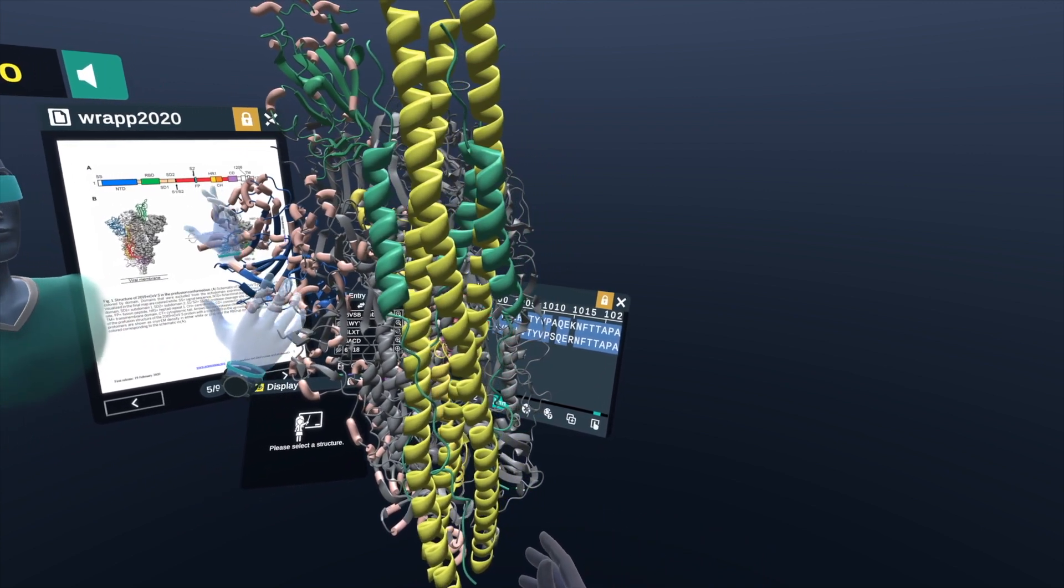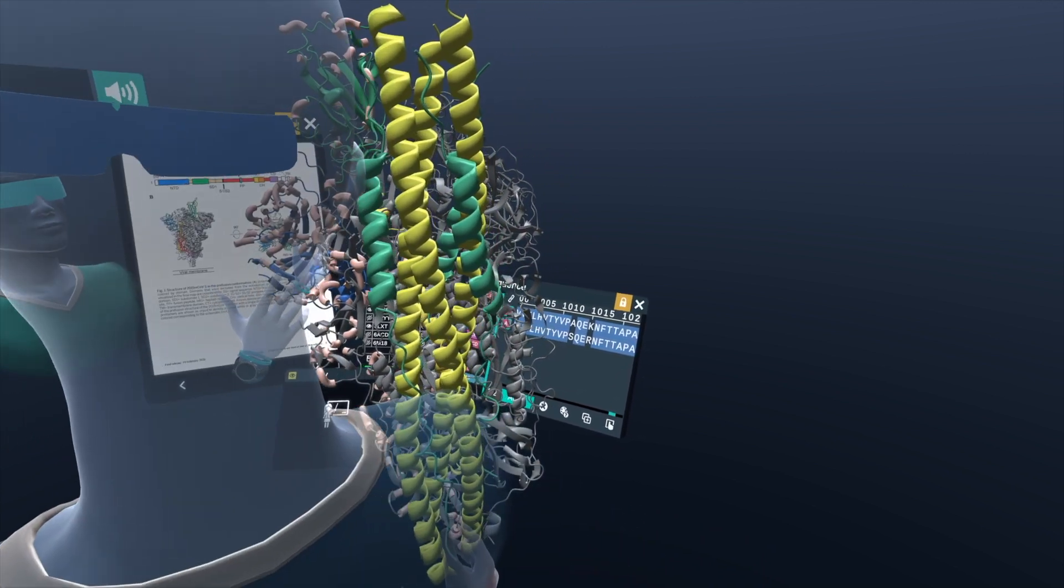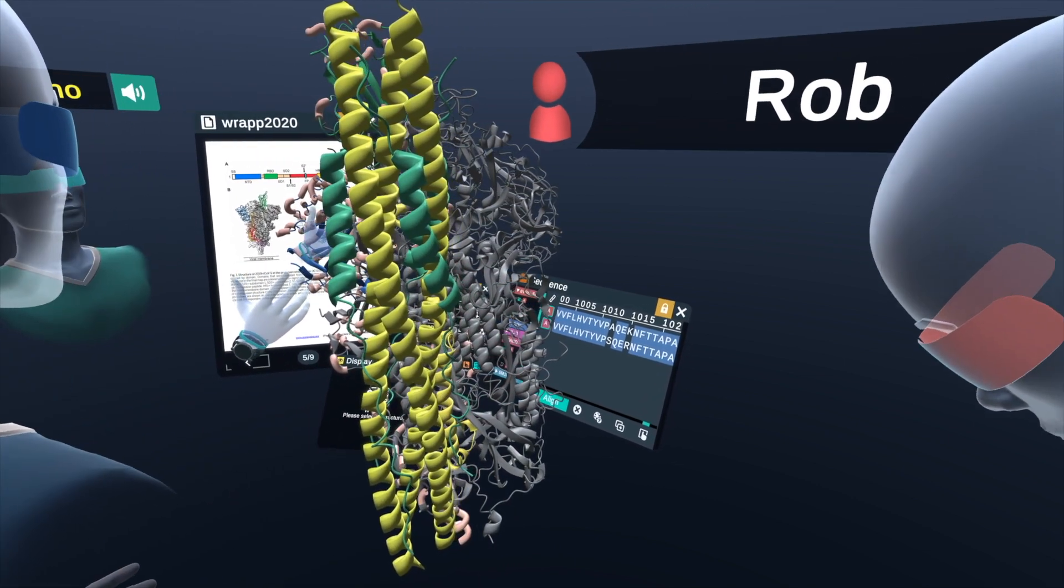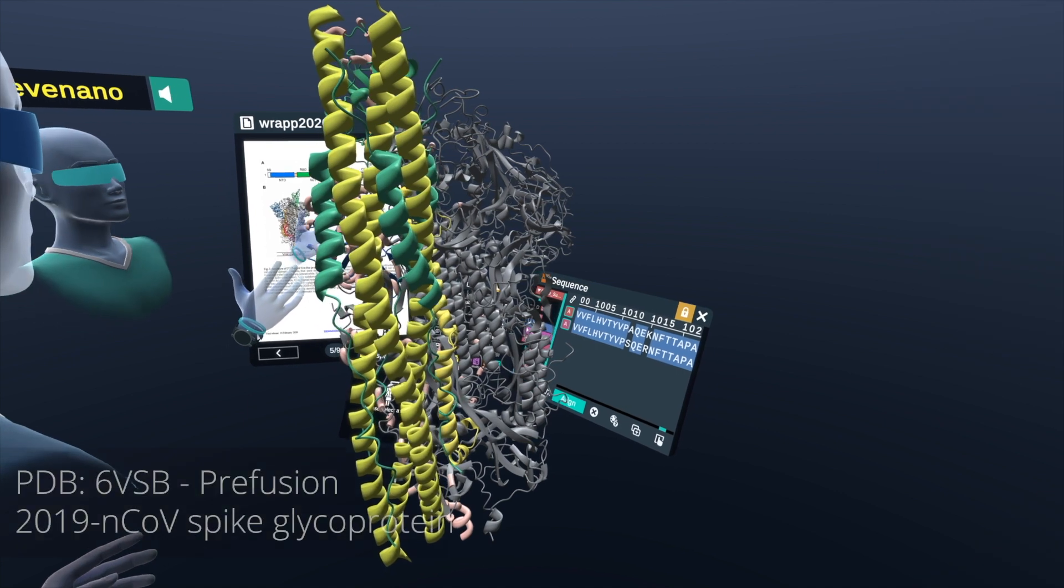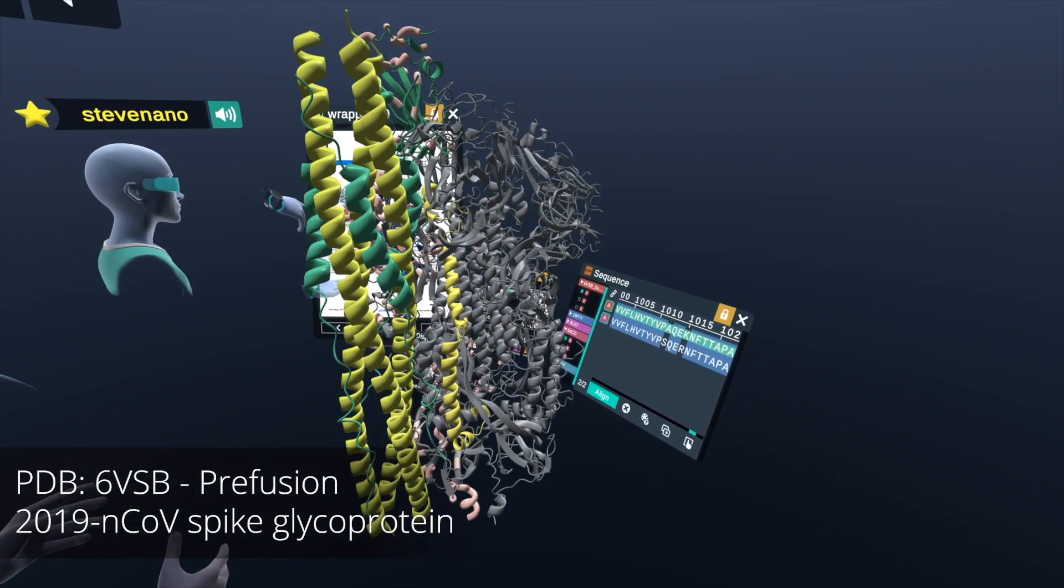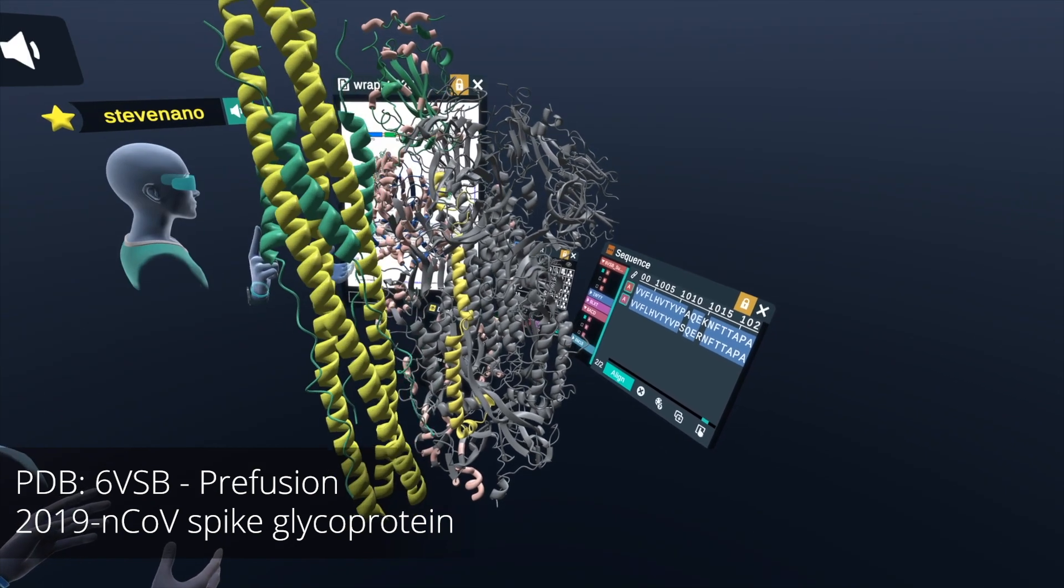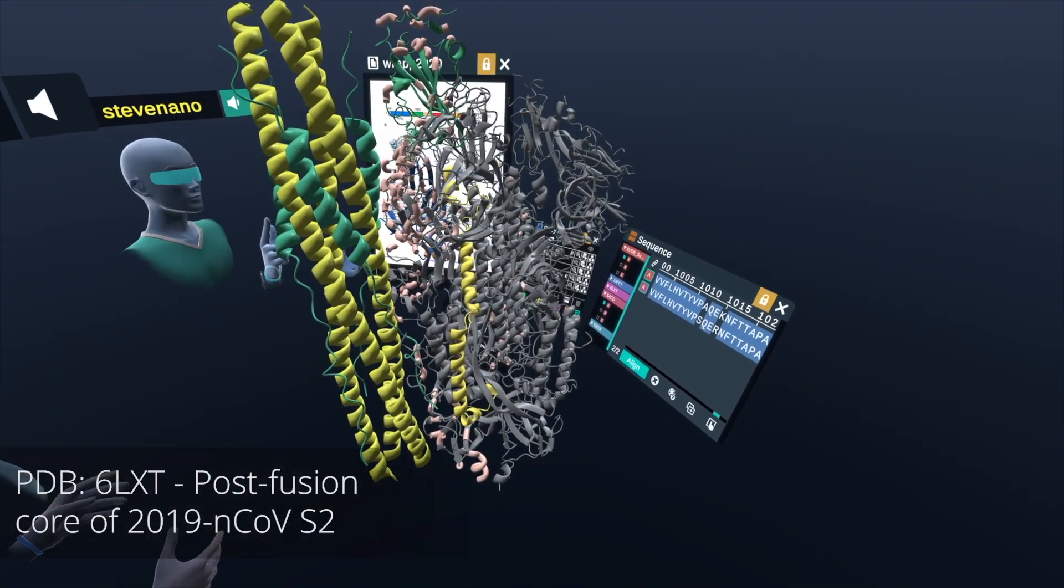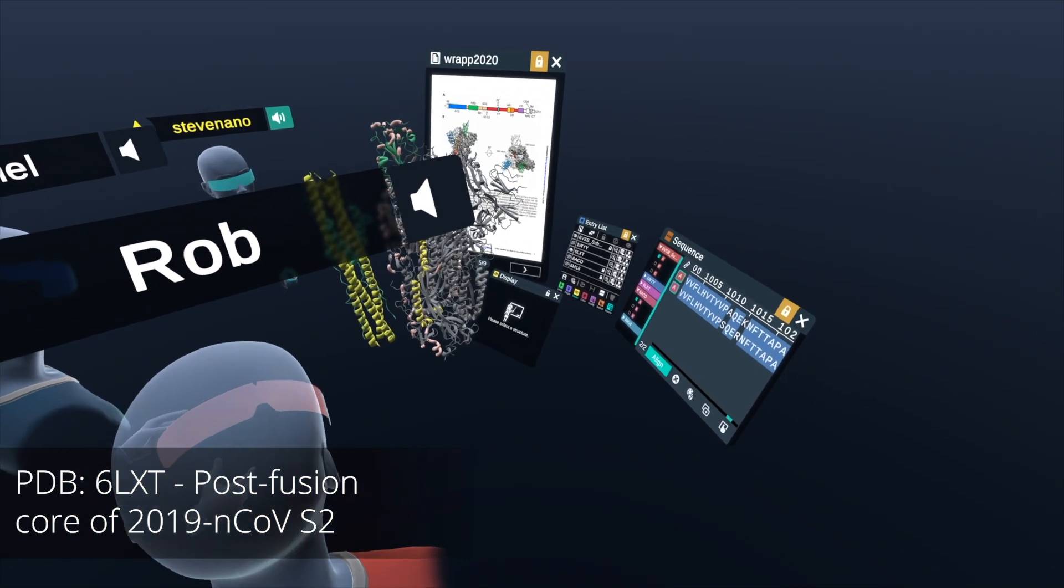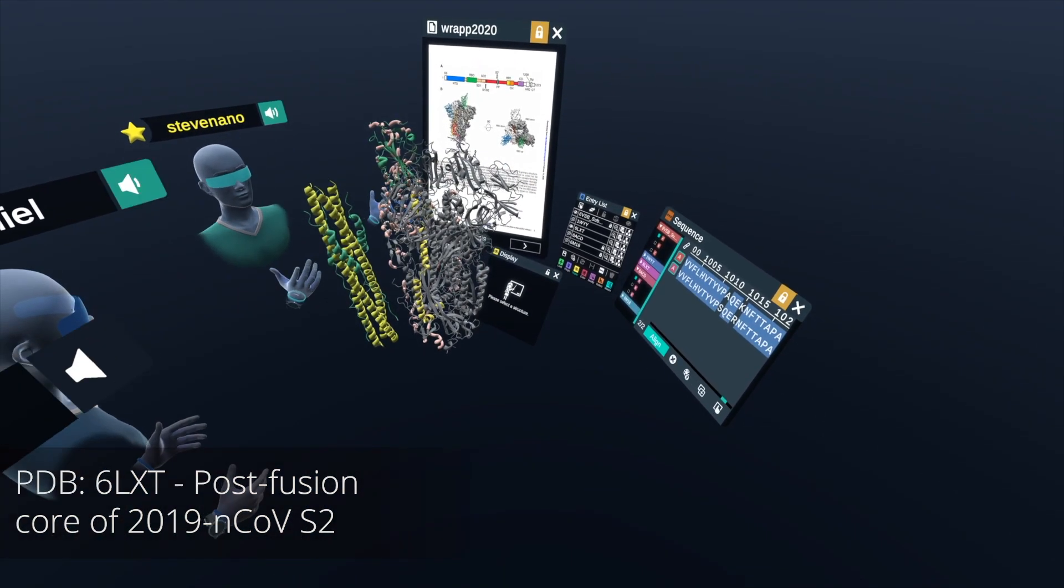One of them is the spike protein. I believe we have the PDB code 6VYB. There's several other codes you could also import right here. This one is 6VSB, and right here, this bundle is 6LXT. And you can import all this in Nanome for free, actually, just from the worldwide Protein Data Bank.